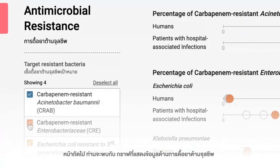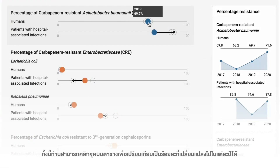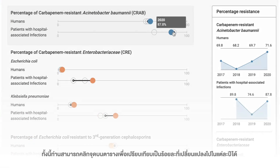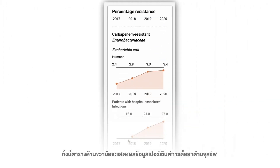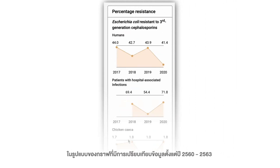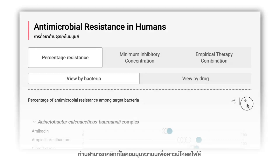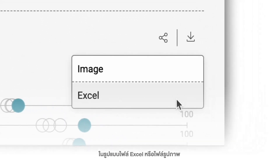On the next page, you'll find a data chart on antimicrobial resistance which consists of highlights. You can click to select a point within the table to compare the percent change by year. The table on the right shows the antimicrobial resistance percentage data as a graph comparing data difference from 2017 to 2020. You can click the button at the top right to download the file in Excel or image format.